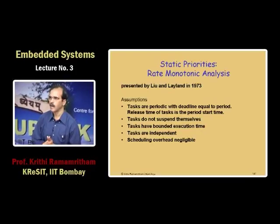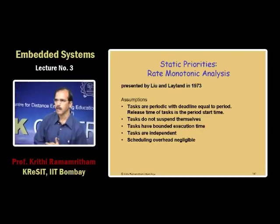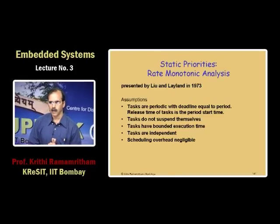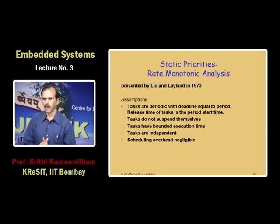There is a fascinating story behind this. Around 1969, Professor Liu, then a young assistant professor at the University of Illinois at Urbana-Champaign, went to JPL — the Jet Propulsion Labs in Pasadena, California — for the summer. Talking to engineers, he found a common theme: they assigned priorities according to smallest period implies highest priority. More frequent tasks get higher priority. It seemed natural but it was not clear whether that was the right approach, so he decided to analyze it from first principles.